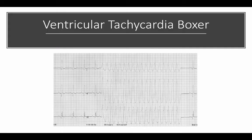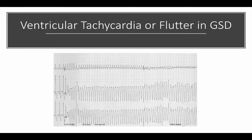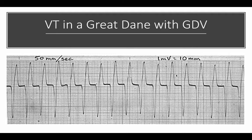Here is an example of ventricular tachycardia in a boxer. In lead 2 we have a relatively upright and narrow complex followed by four complexes that rapidly degenerate into ventricular tachycardia — this could almost be a ventricular flutter, which is just before ventricular fibrillation, so this needs to be treated. Another example shows a ventricular tachycardia or flutter at a very rapid rate with a high likelihood of degenerating into fibrillation. A third example shows VT in a dog with GDV; after treatment with lidocaine and resolution of the volvulus, the arrhythmia resolved.